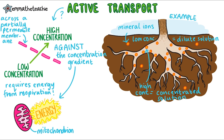In active transport, the mineral ions move from the dilute solution in the soil into the more concentrated solution in the root hair cells. Moving against the concentration gradient requires energy from respiration in the root hair cells. This allows plants to continue to grow even when they're in poor quality soil.